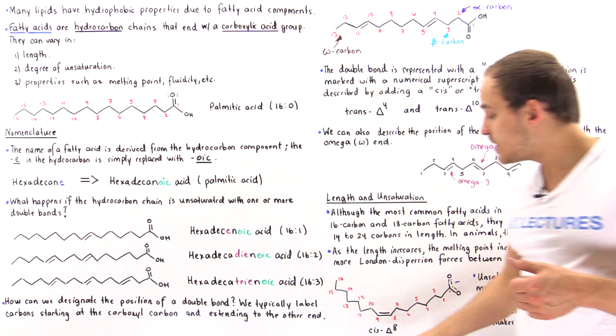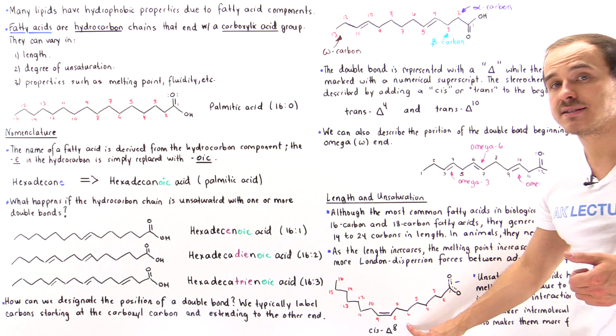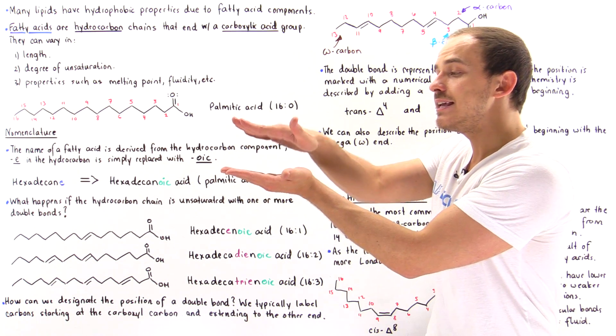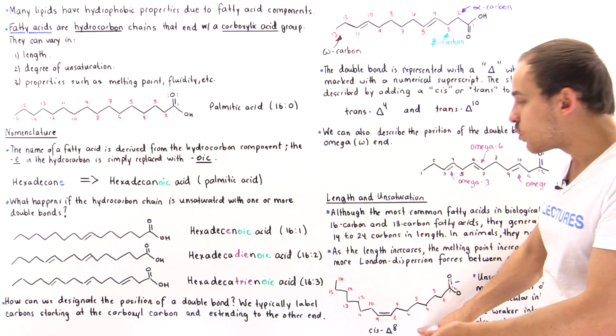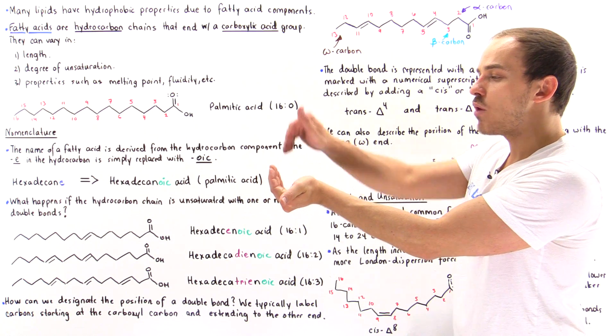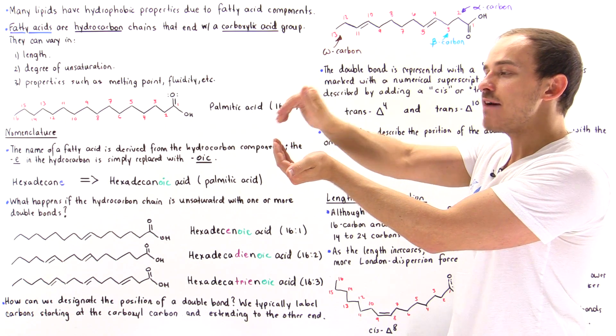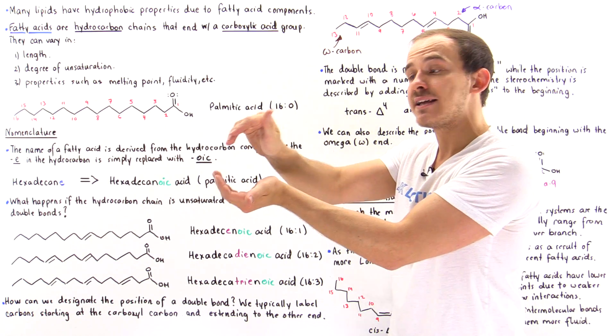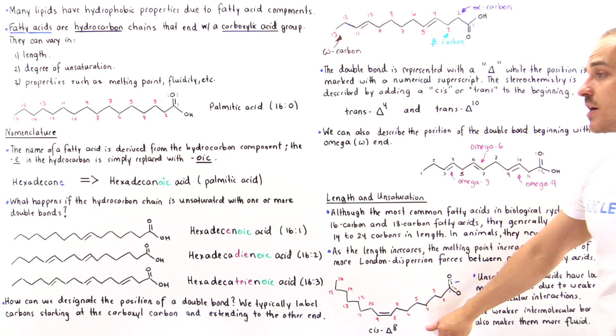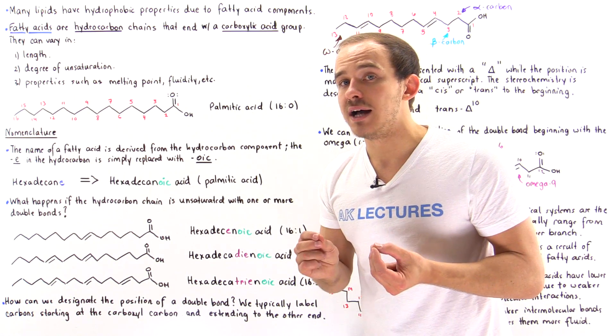But in the mixture that contains these cis double bonds, the stacking isn't very well. So one molecule is positioned this way, the other one is this way, and so we have much less of the intermolecular interaction taking place in the case where we have those double bonds.